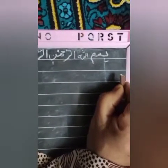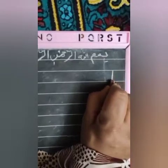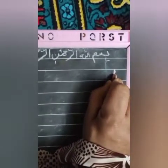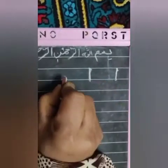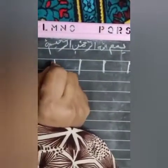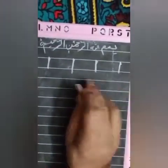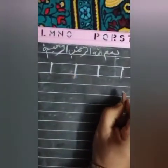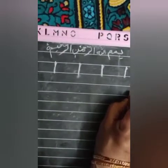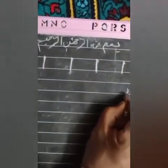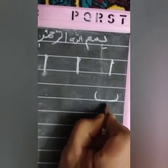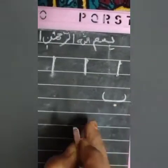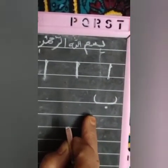Pehle hum kya karte hain bachon? Alif ka revision karte hain. Dekho, is tarike se kya likhenge hum? Alif. Bolo, kya hai ye? Alif. Phir hum likhenge Ba — kaise likhenge Ba? Upar se niche ki taraf ka kao, phir sleeping line, phir niche se upar ki taraf ka kao, niche ek nukta. Ye kya ban gaya bachon? Ba.